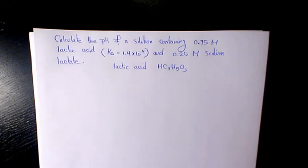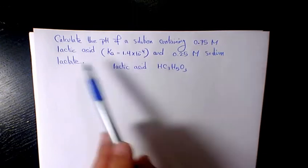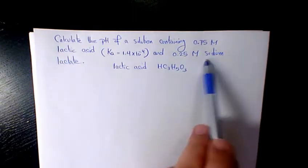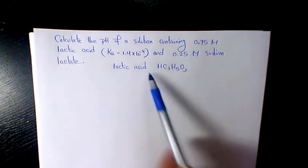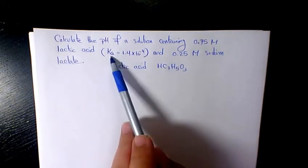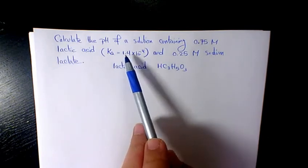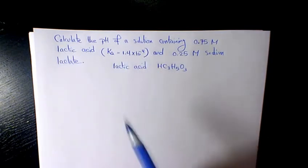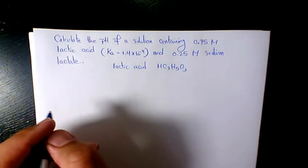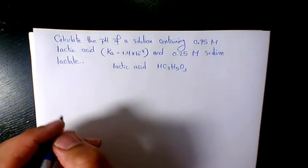What's up guys, this is Massey. Welcome to another video. In this video I want to show you how to find out the pH of the solution containing 0.75 molar lactic acid and 0.25 molar sodium lactate. Lactic acid is HC3H5O3 and the Ka value for lactic acid is 1.4 times 10 to the power of negative 4. So let's see what kind of species we have in this aqueous system.